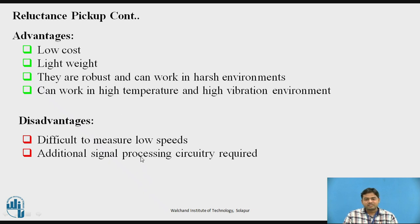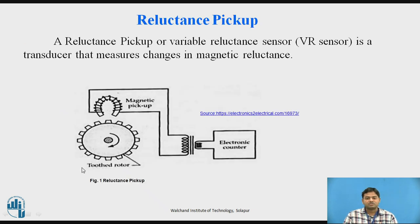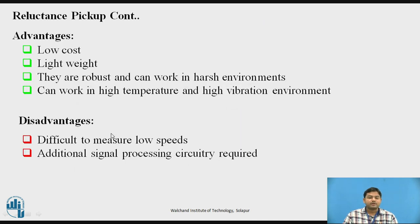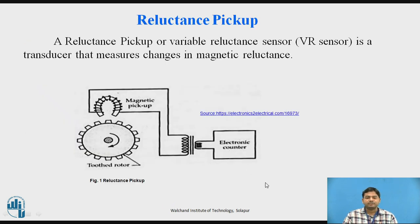What are the disadvantages? It is difficult to measure low speed — if this gear is rotating at low speed it is difficult to measure, because the pulse separation becomes larger as the speed of gear rotation decreases. Also, it needs additional circuitry to process the pulses. These are the disadvantages.